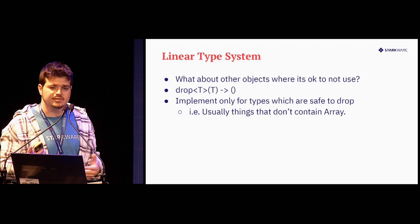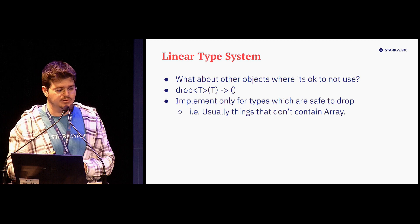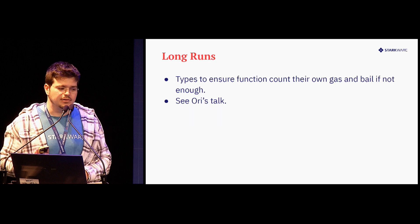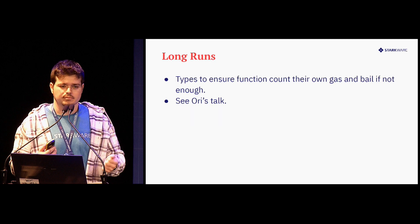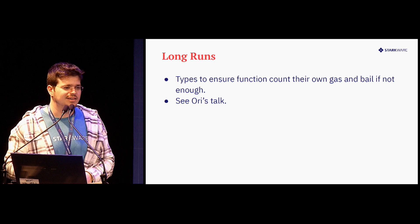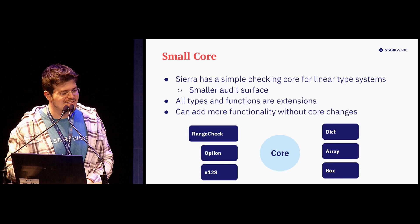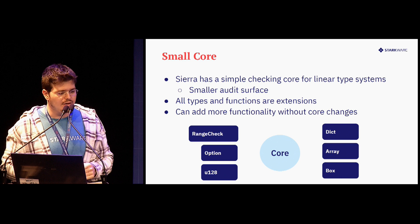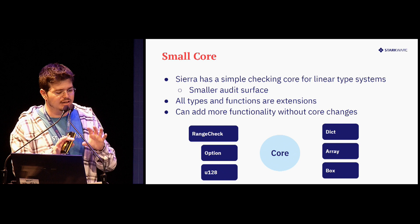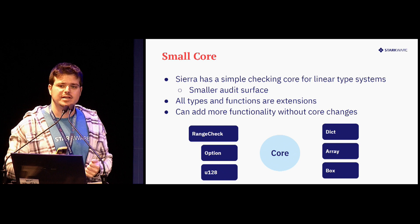And again, for other simple types I introduce the drop function — it just takes an instance and returns zero instances. Now, what about long runs that may be infinite loops? You can see Ori's talk about the halting problem. One of the benefits we have in Sierra is that we have a very lean core that just checks the linear type system.